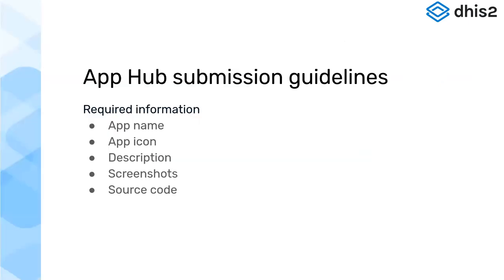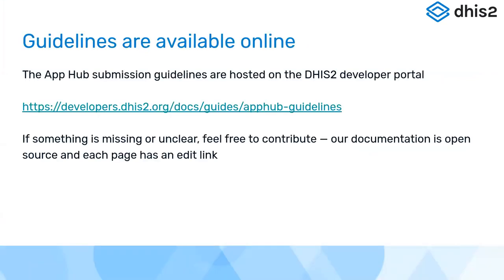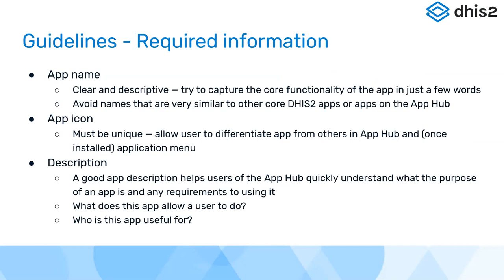Now I'm going to talk about the submission guidelines, which has two sections: the first is the required information, and the second is a wider range of guidelines. The guidelines are available online at the developer portal, and since the documentation is open source, if anything is unclear please fork the repo, make your changes, and submit pull requests — we'll be very happy to review them. For required information: first is the app name, which should be very clear and descriptive. Try to capture what the app does in just a few words.